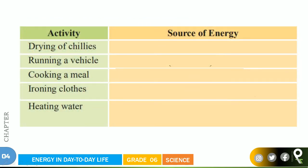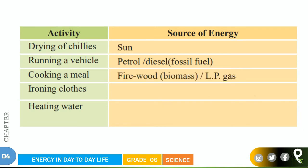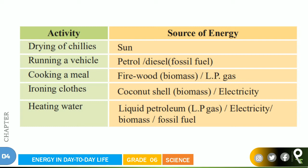There is an activity from the book asking: what are the sources of energy for drying of chilies, running a vehicle, cooking a meal, ironing a cloth, and heating water? Drying of chilies uses the sun. Running a vehicle uses petrol and diesel, which we call fossil fuel. Cooking a meal uses firewood, also called biomass, or LP gas. For ironing a cloth, coconut shells — that's biomass — and electricity are used. You can heat water with LP gas, electricity, biomass, or fossil fuel.